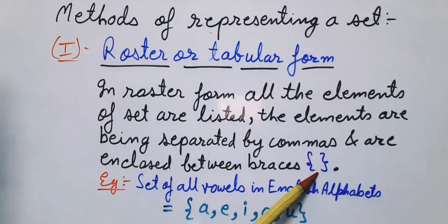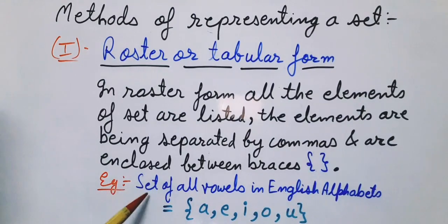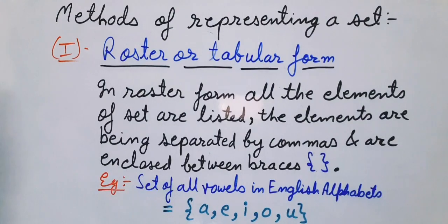For example, set of all vowels in English alphabets is equal to {a, e, i, o, u}. All these elements we have to write in curly braces. So this is all about roster or tabular form.